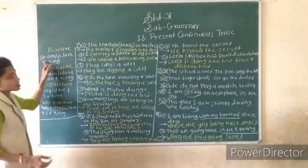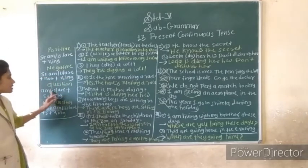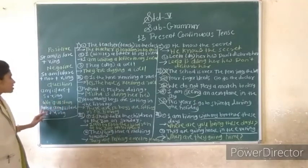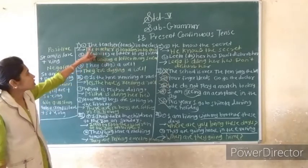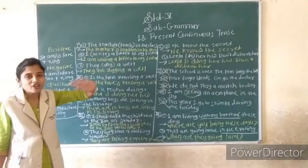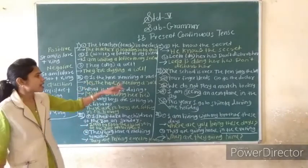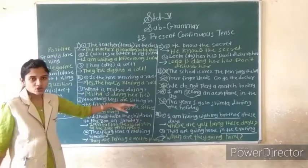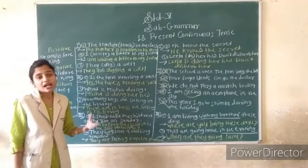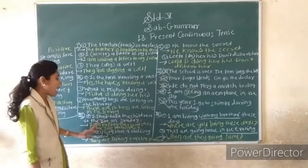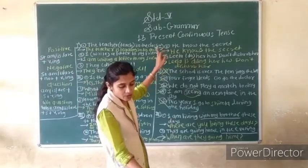In this lesson, what we saw: Positive statement formula — subject + is/am/are + verb+ing. Negative — subject + is/am/are + not + verb+ing. Question — is/am/are + subject + verb+ing. WH question — WH word + is/am/are + subject + verb+ing. First question: present continuous — the teacher is teaching in the class; I am writing a letter to my friend. Second question: answer questions — Is the hare running a race? Yes, the hare is running a race. What is Nisha doing? Nisha is doing her homework. Third question: I shall take the children to the zoo on Sunday — I am taking the children to the zoo on Sunday. They will have a meeting tomorrow — they are having a meeting tomorrow.